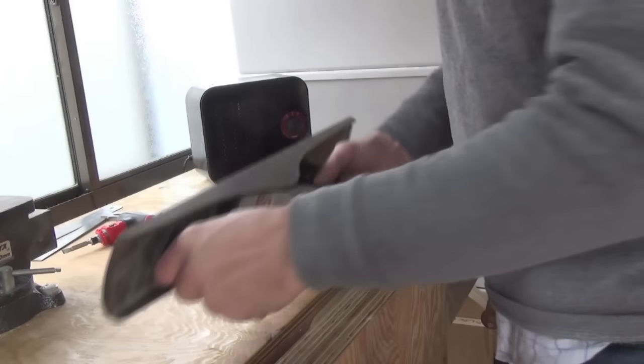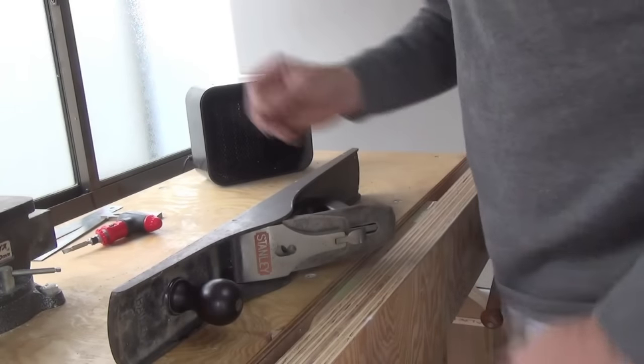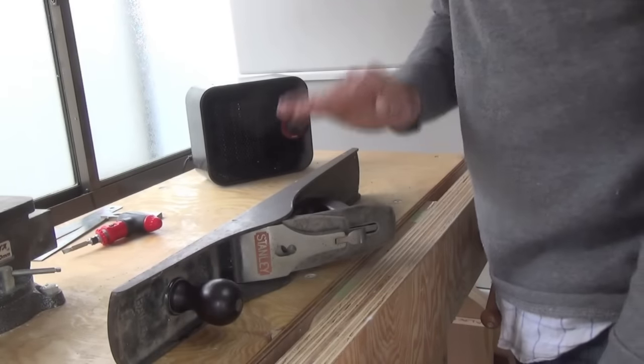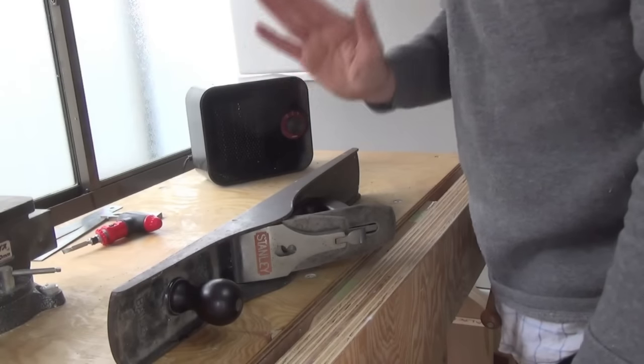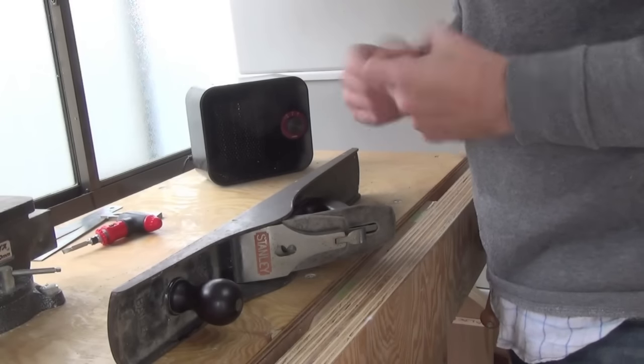With a plane like this, really what you need to do is simply restore it to usable condition. The bottom doesn't need to be mirror polished. It doesn't need to be absolutely perfectly flat to do its job well. Of course, the flatter you can get it, the better.